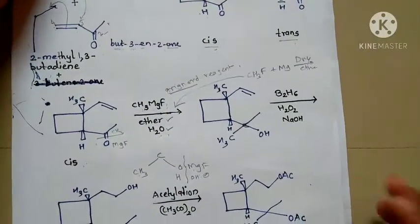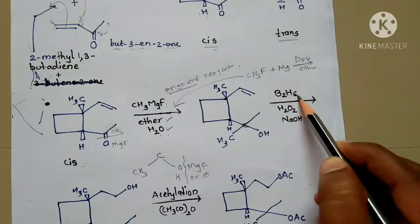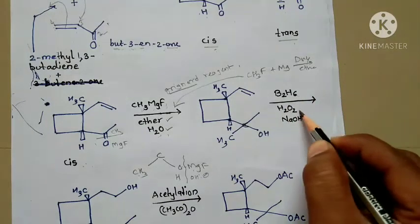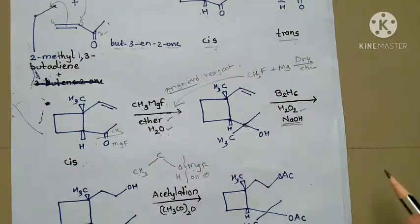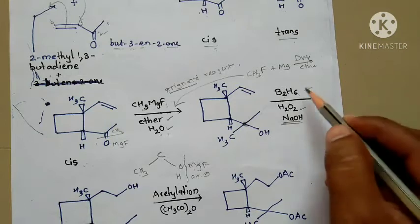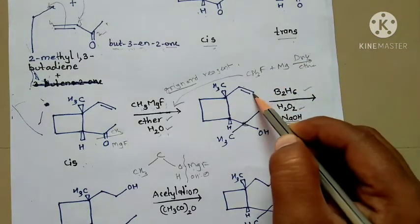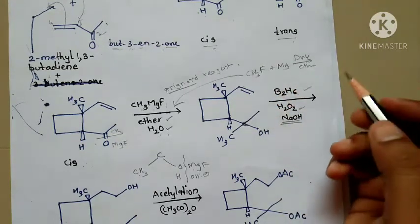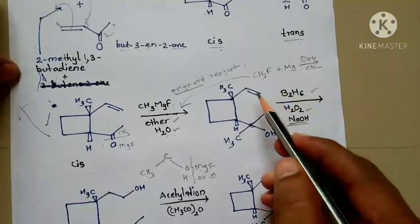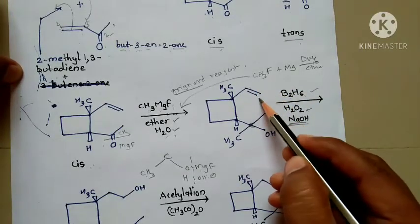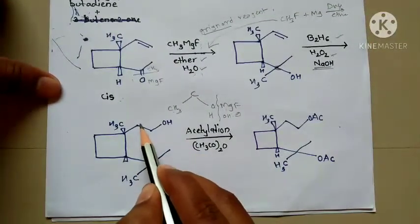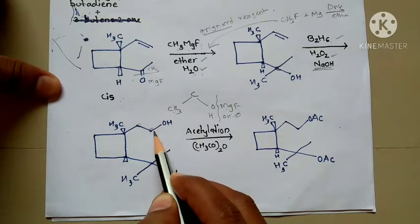The next step is B₂H₆ — that is, diborane. In the presence of hydrogen peroxide and NaOH (basic medium), diborane converts the C=C molecule into alcohol form. The C=C is totally reduced and you get alcohol. The byproduct formed is two moles of B(OH)₃, boron trihydroxide.